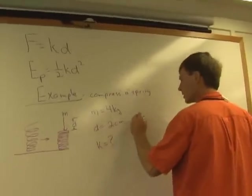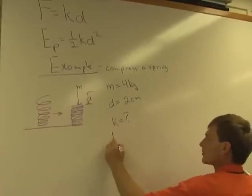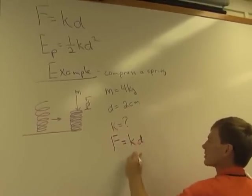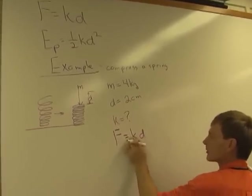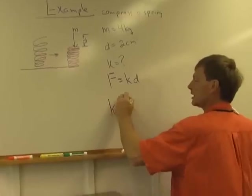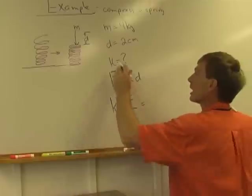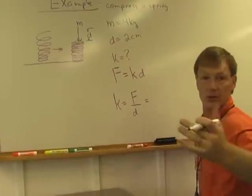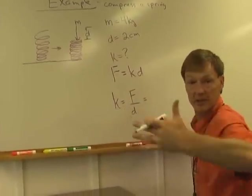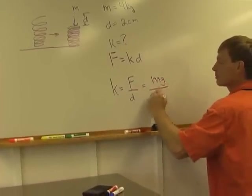Let's see. Force, Hooke's Law says force is the spring constant times the displacement. Now, I solve for the spring constant. I divide both sides by the displacement. The spring constant is the force over the displacement. I know the mass, the force is the weight of whatever I stuck on there. So that's mass times gravity. So force is mass times gravity. And it's over the displacement.